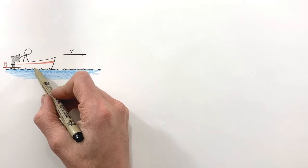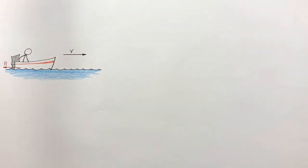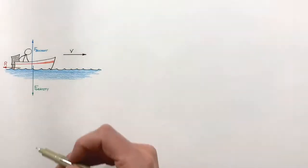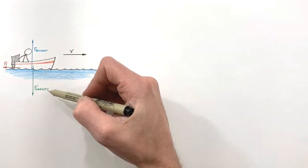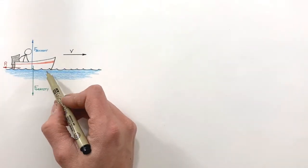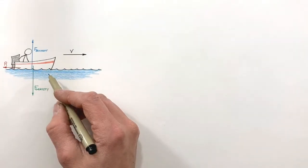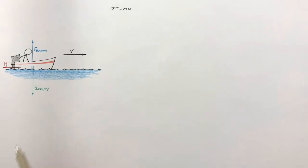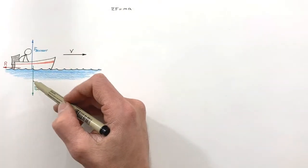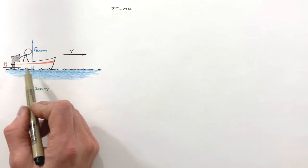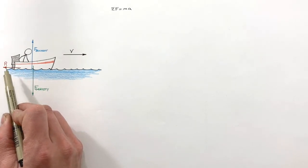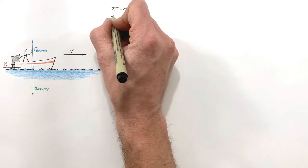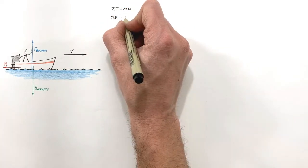There's also gravity and the buoyant force acting on the boat vertically — gravity acting downward and the buoyant force acting upward — and these two forces simply cancel each other out. To look at what happens once the engine cuts out, we apply Newton's second law. Vertically the boat isn't accelerating; horizontally, the only force is the resistive force backward, so the sum of all forces equals R.